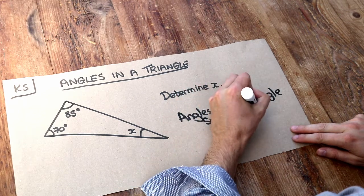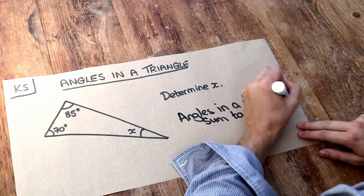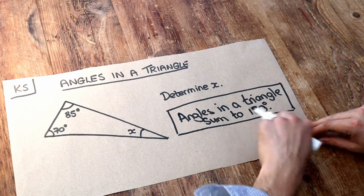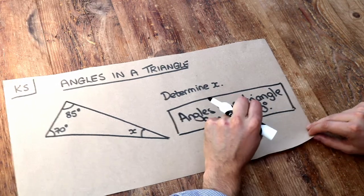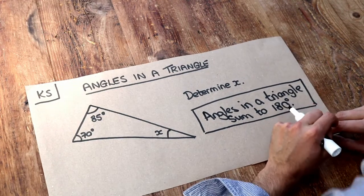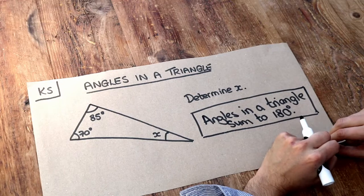If we add up the three angles inside the triangle, they will add up to 180 degrees. We don't say that angles in a triangle are 180 degrees, because that would suggest all three angles are each 180 degrees, which is not true. They add up, they sum to 180 degrees.